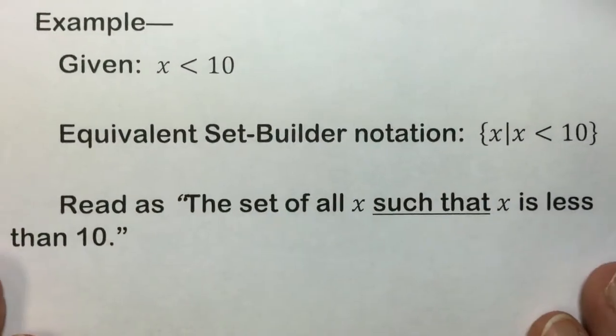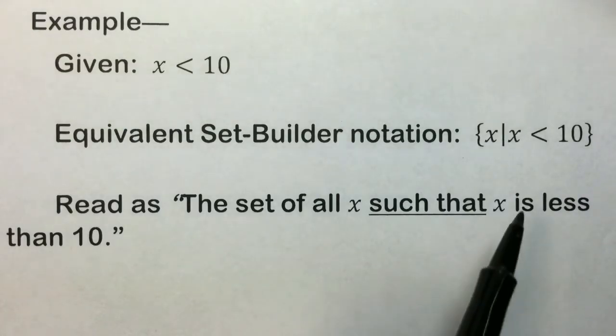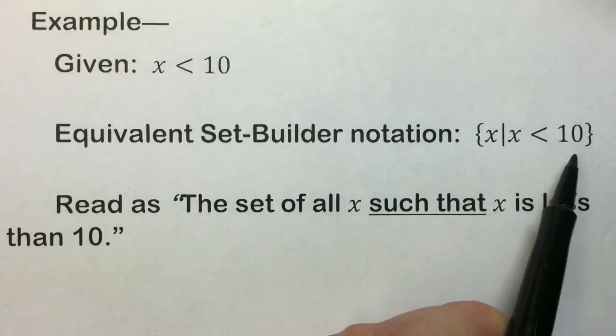Here's another example. Given the inequality x is less than 10, an equivalent set-builder notation for this inequality is the set of all x such that x is less than 10.